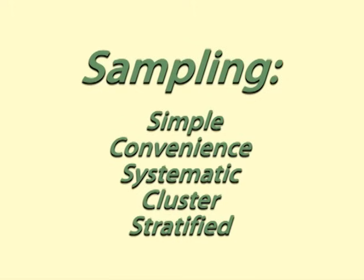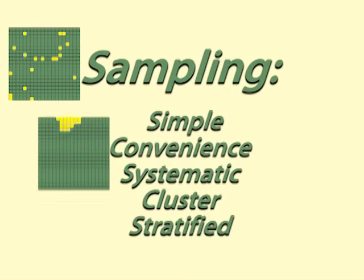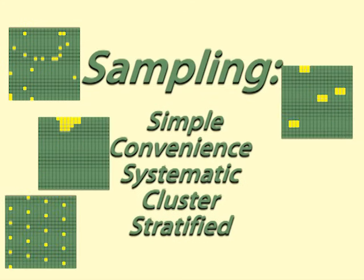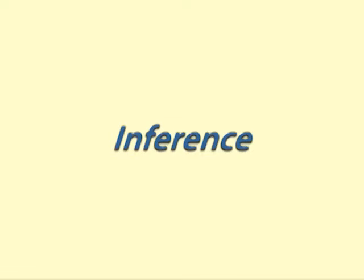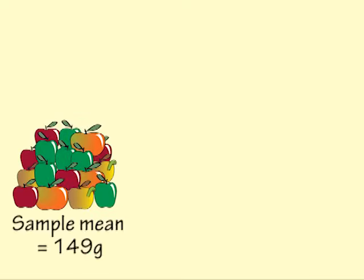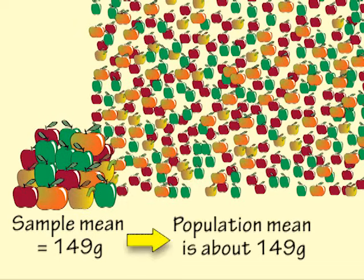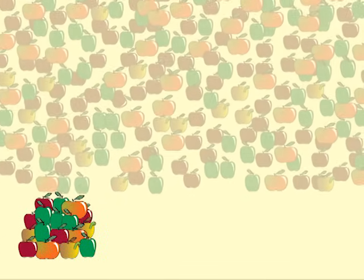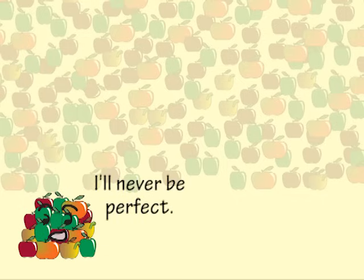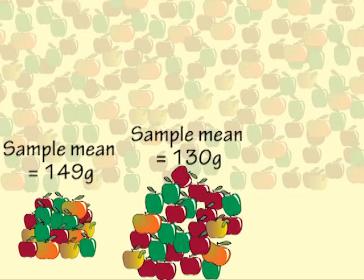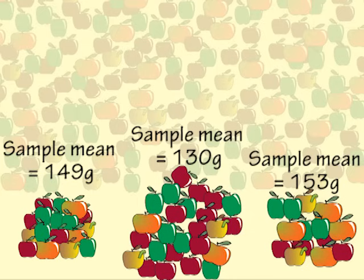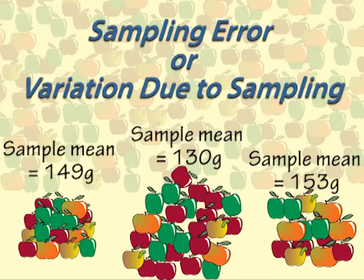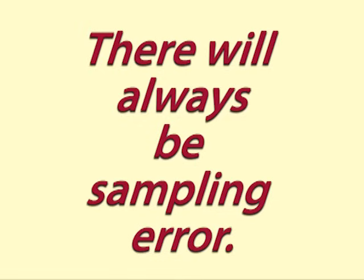To find out about different sampling methods, see our video on sampling — simple, random, convenience, etc. Inference is when we draw conclusions about the population from the sample. Because the sample is only a selection of objects from the population, it will never be a perfect representation of the population. Different samples of the same population will give different results. This is called sampling error, or variation due to sampling. There will always be sampling error.